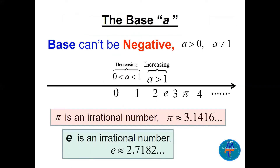The base a cannot be negative — a must be greater than zero. Also a cannot equal one, because if a equals one the whole function equals one, so it would not be exponential.